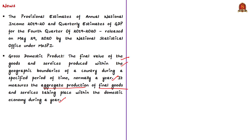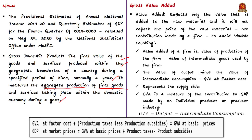Gross Value Added (GVA) refers to the value addition to a raw material by a firm. Imagine a firm purchased a raw material for ₹10 and made a product whose final value is ₹100. We need to subtract the cost of raw material to arrive at the value added by the firm: 100 minus 10 equals ₹90. This raw material used by the firm is called intermediate consumption. So GVA can be mathematically expressed as: output minus intermediate consumption. This is what we call GVA at factor cost — the GVA by the firm using its factors of production.